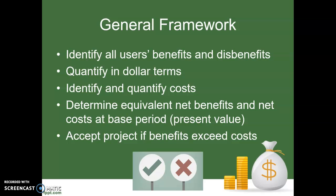If you set it up as a ratio of benefits divided by costs and that ratio is greater than one, then the benefits outweigh the costs and it's a project you would want to undertake. If the benefit-to-cost ratio is less than one, that means the project is going to cost more than it benefits us, so we would not want to undertake that project.